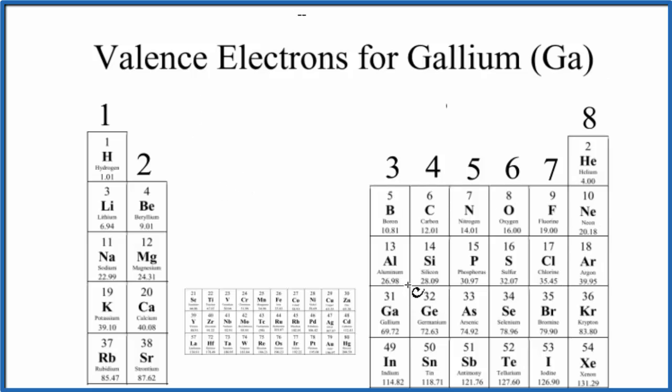When we find gallium on the periodic table, it's right here, Ga. It's in group 13, sometimes called 3a, and it has three valence electrons. So gallium has three valence electrons according to the group it is in on the periodic table.